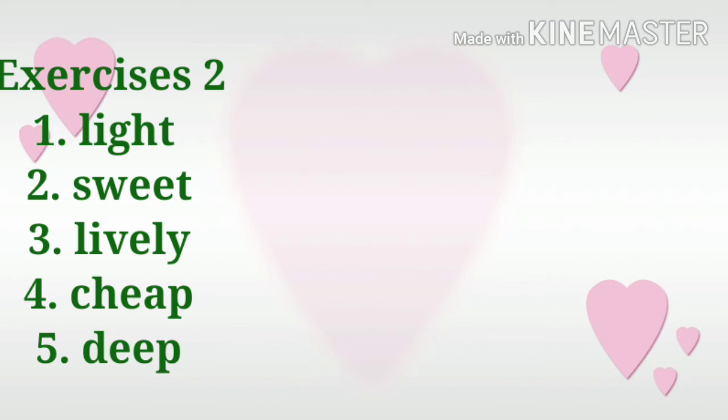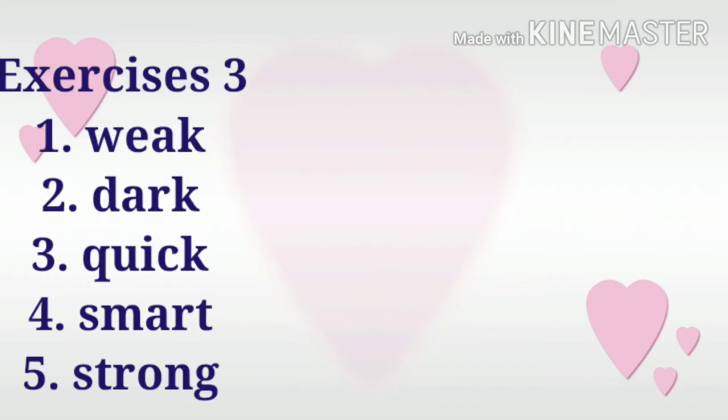Let's now move to exercise number three. Tell me the comparative degree and superlative degree of the following words. Number one: weak. Number two: dark. Number three: quick. Number four: smart. Number five: strong. Can you tell me the comparative degree and superlative degree of the following words?